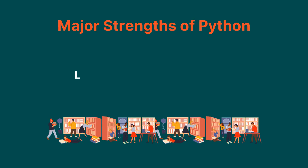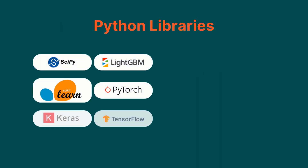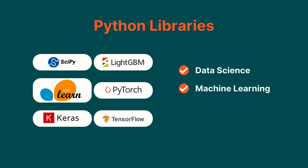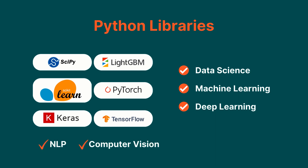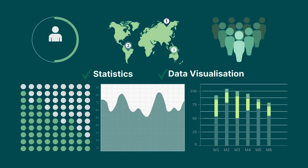One of the major strengths of Python is its large ecosystem of libraries. The Python community has developed a wide range of libraries for data science, machine learning, and deep learning. These libraries make it easy to perform tasks such as natural language processing, computer vision, and time series analysis. In contrast, R's ecosystem is more focused on statistics and data visualization.